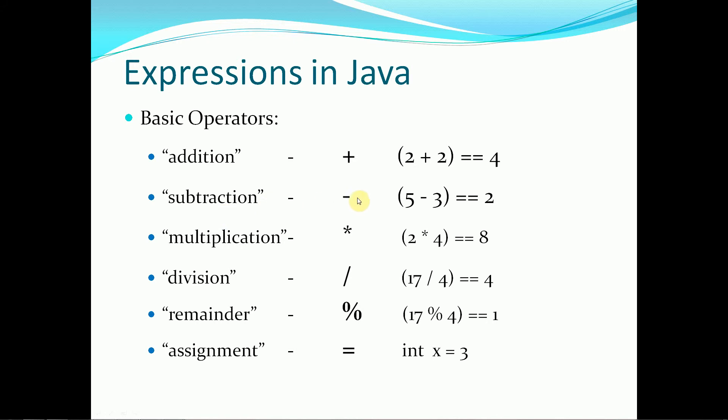Subtraction we use the minus symbol, 5 minus 3 is the equivalent to 2. Multiplication, we use the asterisk, so 2 times 4 is the equivalent to 8.